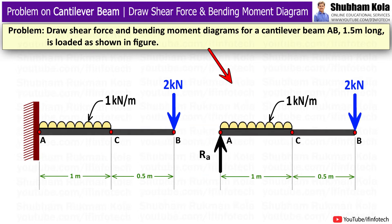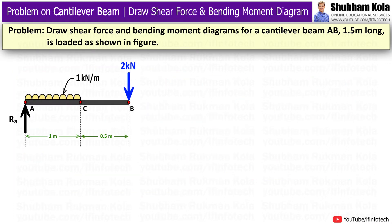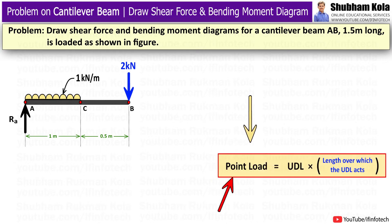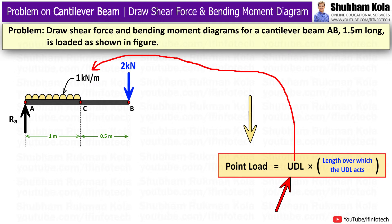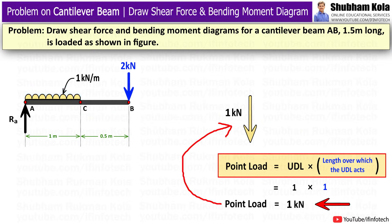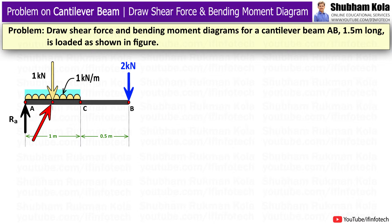First, I will draw the free body diagram for this beam section. We have to convert the UDL into a point load. To do this, I will multiply the UDL value of 1kN per meter with the length over which the UDL acts, which is 1 meter. So I get a point load of 1kN, and this calculated point load acts at the midpoint of the length over which the UDL acts.